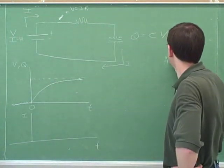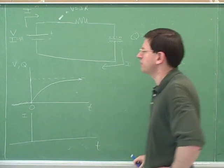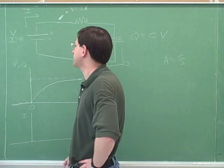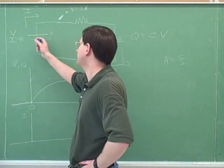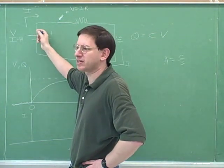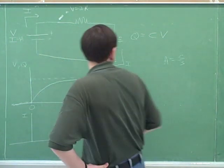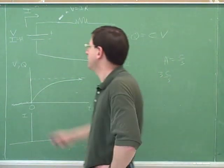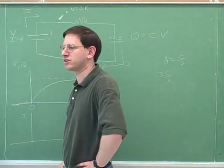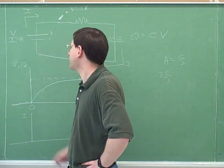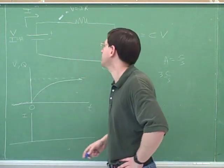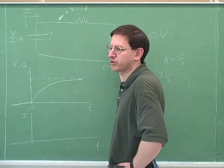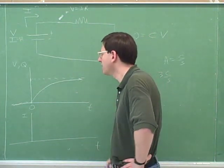Remember that an amp is a Coulomb per second. We can think of the battery like a ski lift that's lifting the skiers from the bottom of the slope to the top. So 3 amps is like saying 3 skiers per second. If 3 skiers per second are getting off the ski lift, we would expect 3 skiers per second going through each portion of the path.